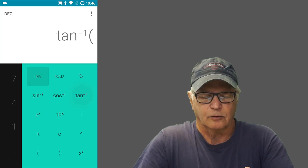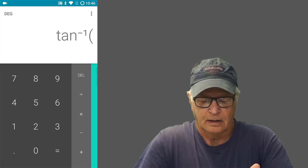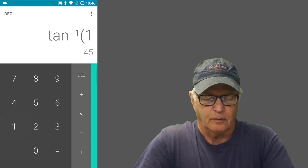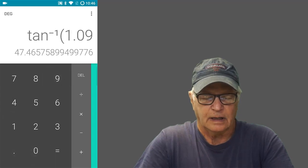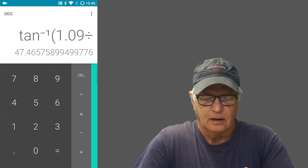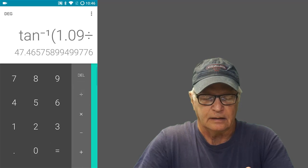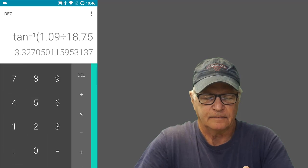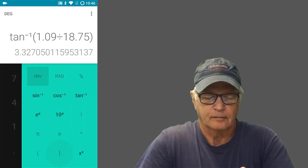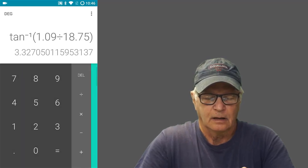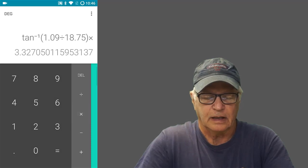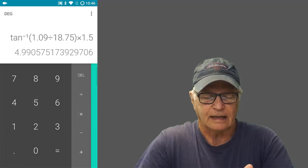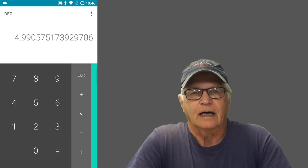So we're looking at the cotangent of 1.09 divided by the diameter of the rim, 18.75, and multiply it by 1.5 to get the full caster. Equals. So 4.99 degrees.